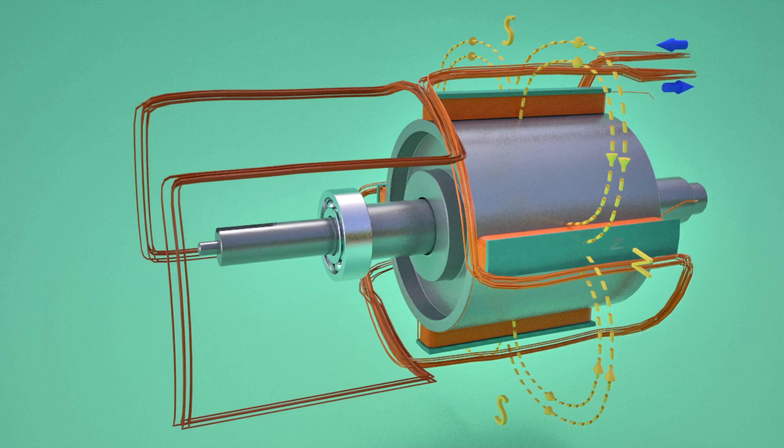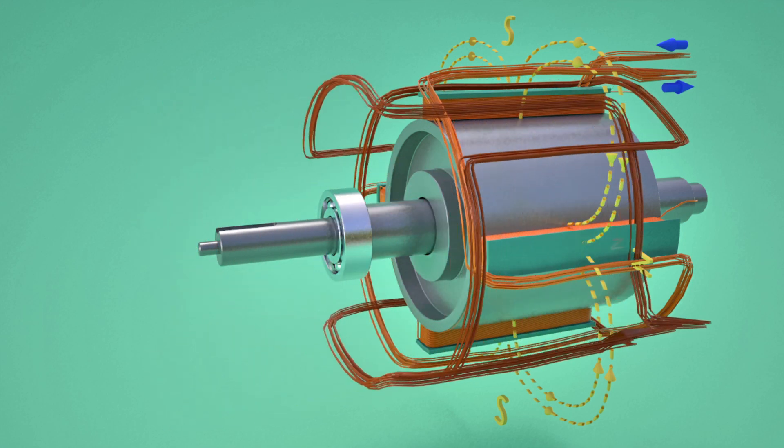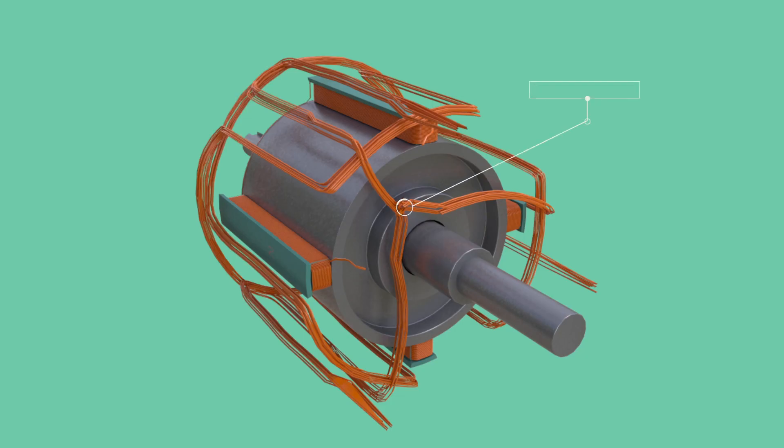For producing three-phase AC current, two more armature coils, which are in 120-degree phase difference with the first, are put in the stator winding.